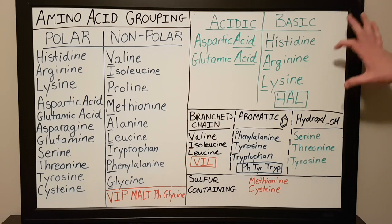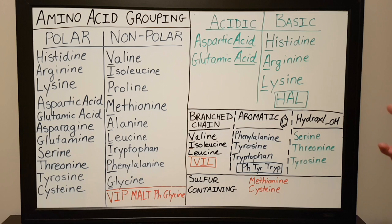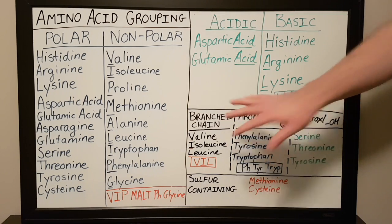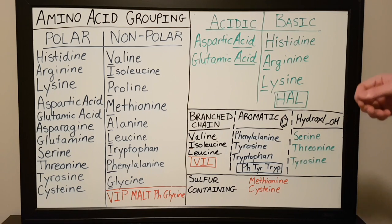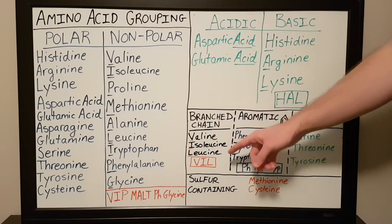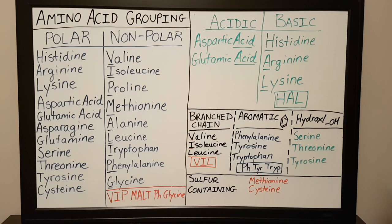That's a really easy way to remember which amino acids are basic: histidine, arginine, and lysine. The rest of the groups are subcategorizations depending on specific chemical groups in the R side chain of the amino acid. The branched chain amino acids are all nonpolar and have a branched structure for their R group. These are valine, isoleucine, and leucine — easy to remember as VIL.